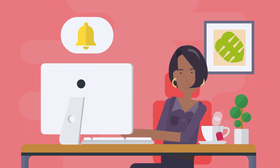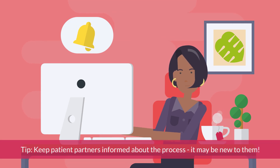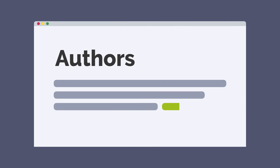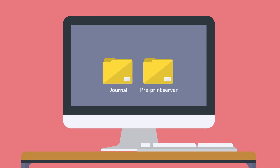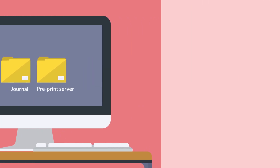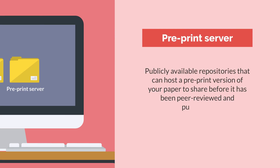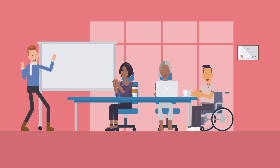The corresponding author receives communications and updates about the paper from the journal throughout the peer review and publication process, and their name usually appears last in the list of authors. Some teams submit to a journal and a pre-print server at the same time, so the paper and study findings can be shared on the pre-print server for anyone to see before it's peer-reviewed and published.